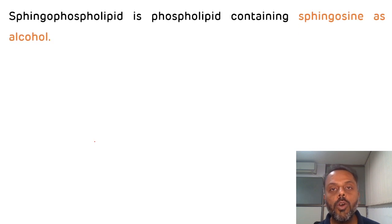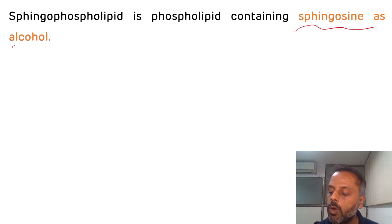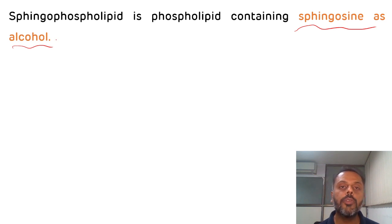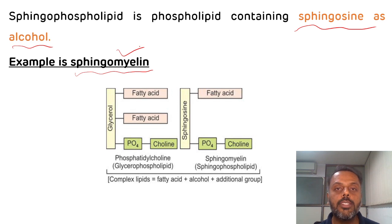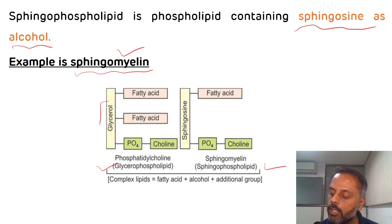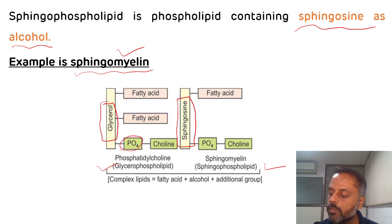Sphingophospholipids contain sphingosine as alcohol. They are a type of phospholipid which contains sphingosine as alcohol, and the example of sphingophospholipid is sphingomyelin. Glycerophospholipids contain glycerol while sphingophospholipids contain sphingosine, and both contain phosphate as an additional group.